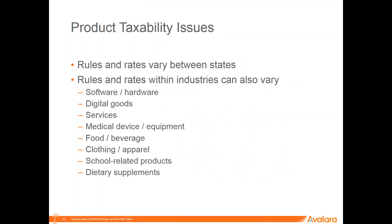Some other product taxability issues: the rules and rates may vary between states. What I listed on the previous slide was very specific to a product and a state — those same products will likely be taxed differently in another state. The rules and rates obviously can vary. In some states like Minnesota, clothing items are non-taxable. In other states they're taxable. And in even other states, they're taxable only once they exceed a certain dollar amount. So you're going to have different tax rates based on where you're shipping product to or where you have nexus.